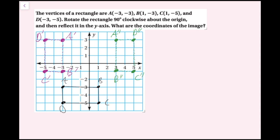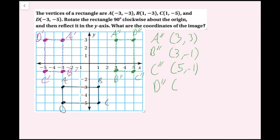I've successfully drawn my final image of both transformations. The coordinates of the final image are: A″(3, 3), B″(3, −1), C″(5, −1), and D″(5, 3). I've labeled all the coordinates and now we're done.